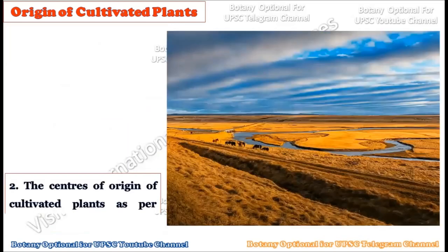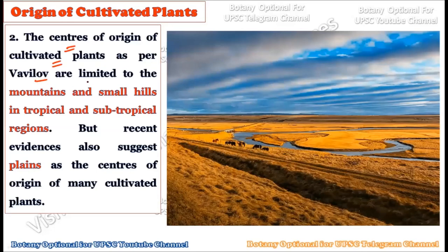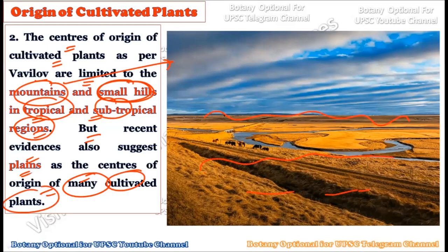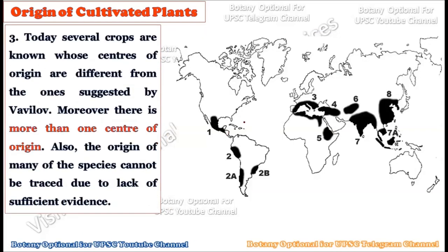A second limitation is that Vavilov's centers of origin of cultivated plants are limited to mountains and small hills in tropical and subtropical regions. However, recent evidence suggests that the plains were also responsible for the origin of many crop plants. This second assumption — that centers of origin were always located around hills or mountains — is also not fully supported by current knowledge.